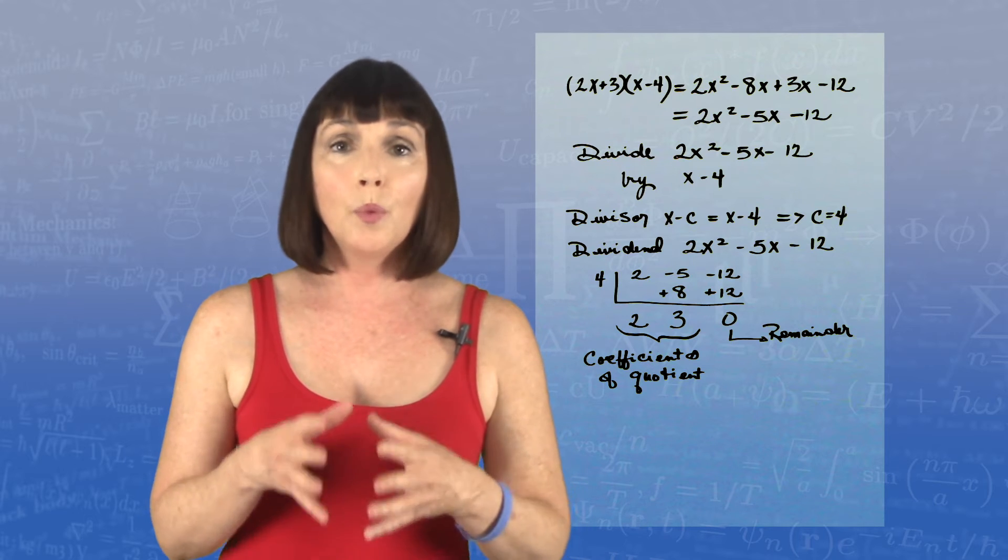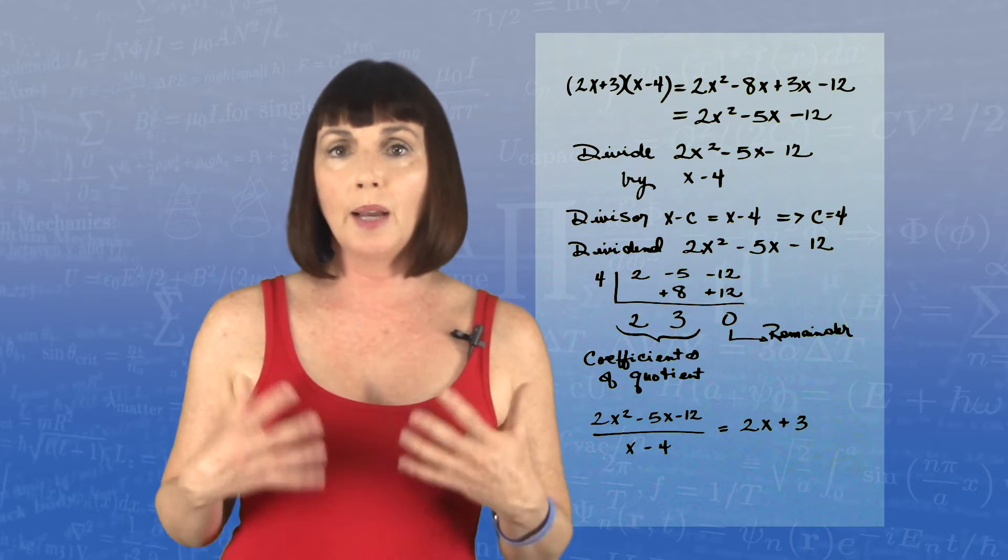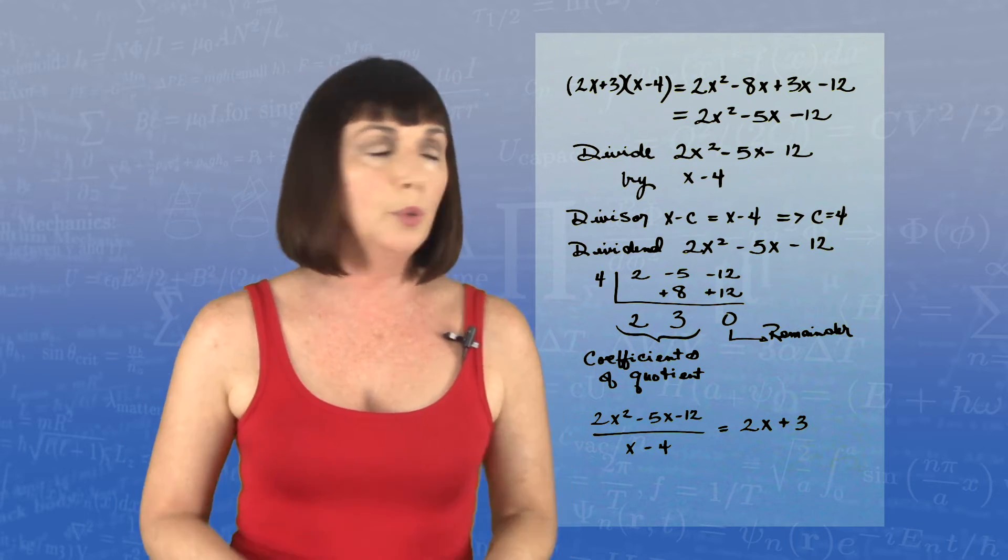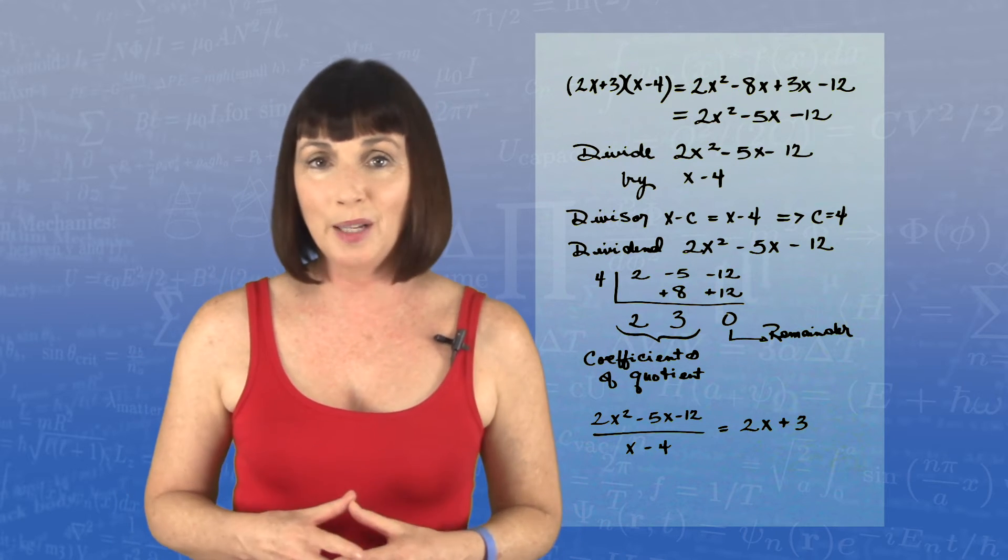So what we have is 2x squared minus 5x minus 12 divided by x minus 4 is equal to 2x plus 3, which is exactly what we knew it should be.